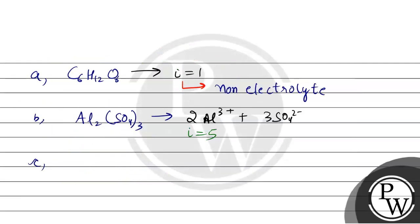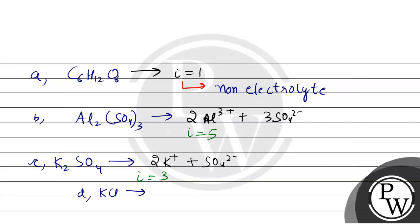For option C, we have K₂SO₄ and KCl. K₂SO₄ (potassium sulfate) is an ionic compound; it breaks down into 2 K⁺ plus SO₄²⁻, so i = 2 + 1 = 3. Then KCl (a simple salt) breaks down into K⁺ plus Cl⁻, so i = 2.